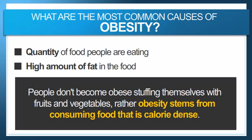People don't become obese by eating tons and tons of fruits and vegetables. Rather, obesity really stems from consuming foods that are what we call calorie dense — calorie density. So much of the calorie dense foods are animal-based foods that are, sadly, what many people prefer to eat. Calorie dense just means that for the size of the food, there are lots and lots of calories. That's calorie density. That's the most common cause: eating more calories than you need.